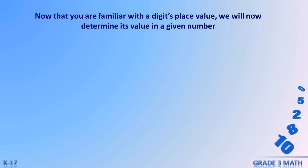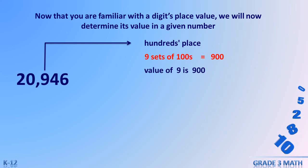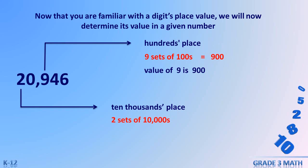Now that you are familiar with a digit's place value, we will now determine its value in a given number. Let's have 20,946 as an example. The digit 9 is in the hundreds place value — it means there are nine sets of 100s, which is equal to 900. So the value of digit 9 is 900. The digit 2 is in the ten-thousands place value — there are two sets of ten thousands, which is equal to 20,000. The value of 2 in this given number is 20,000.